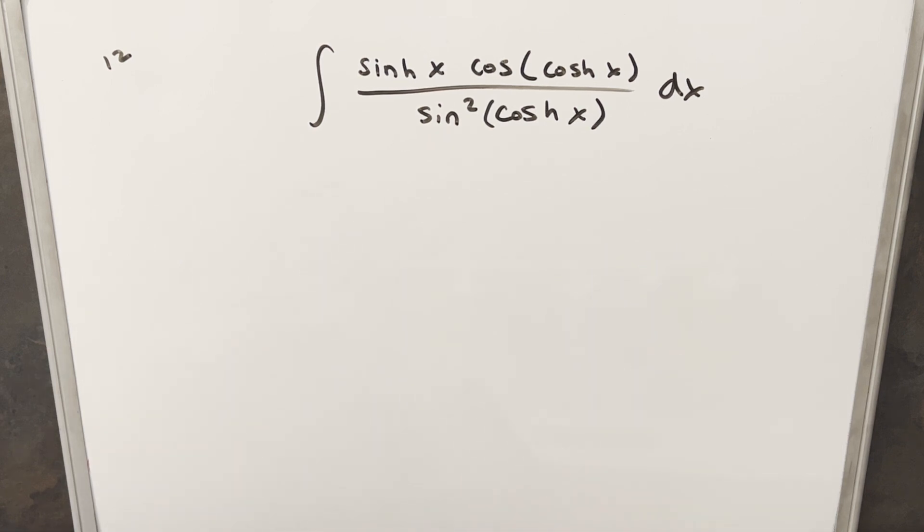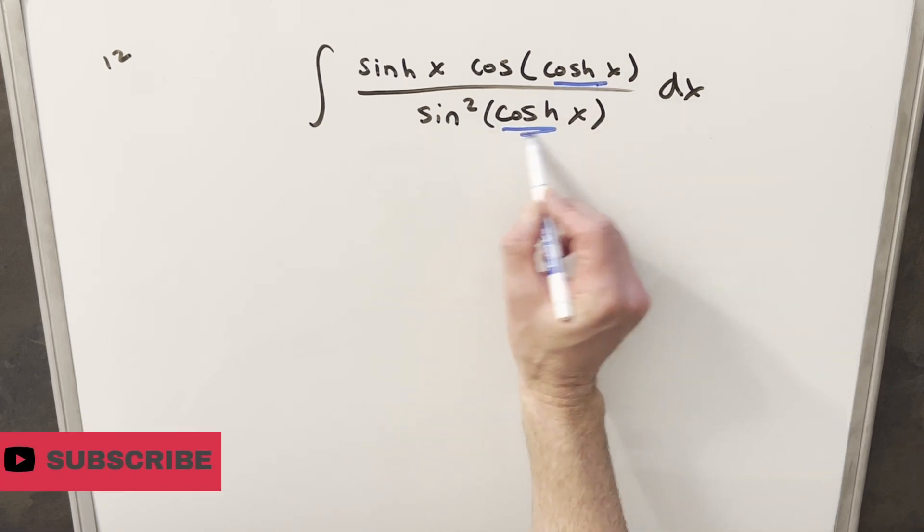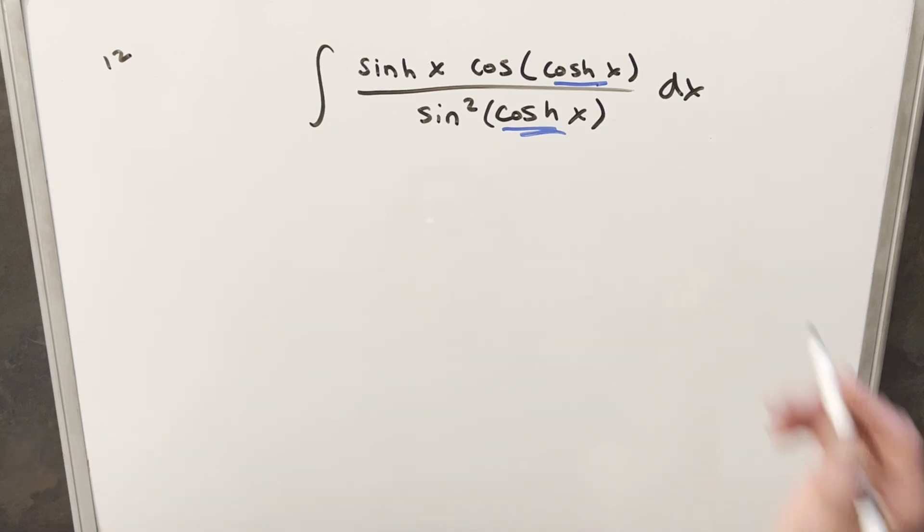Okay, to get started with this, the first thing I notice is the fact that we have these kind of embedded trig functions that we don't really want. And since we have the same value here and here, let's try to clean this up with a u substitution.